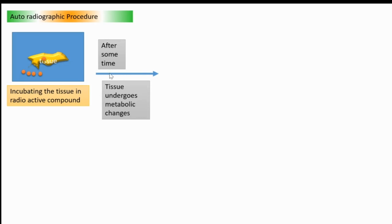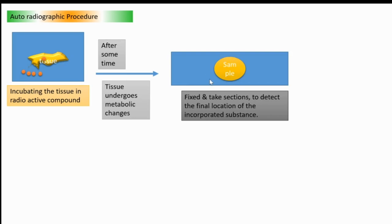And next, we are going to inspect what is the changed position of that isotope in the tissue. For that, we take a section out of this tissue. It is a sample section we prepared, it is fixed. Fixation process we have already learned. And our intention is to detect the final location of the incorporated substance, what is its path inside that tissue.